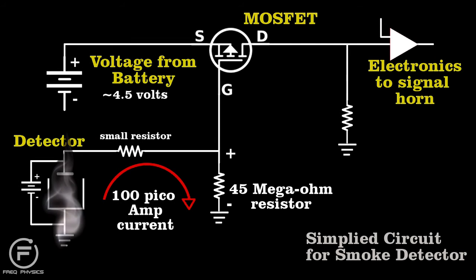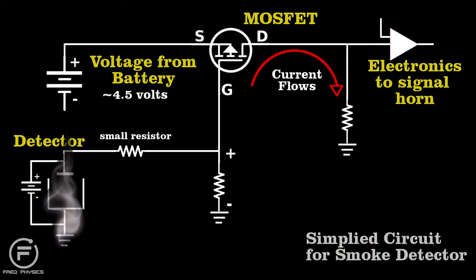If smoke enters the chamber, the tiny current stops. The MOSFET allows current to flow in this section of the circuit, which triggers the horn.